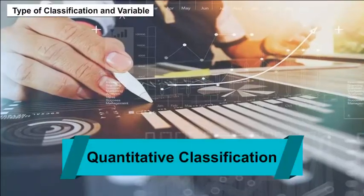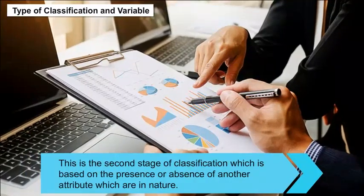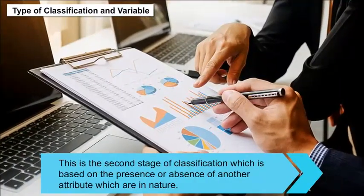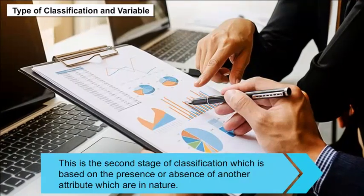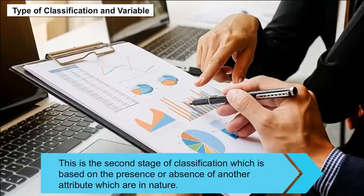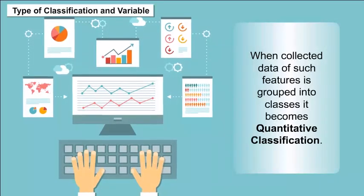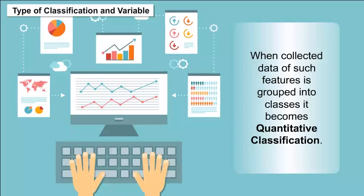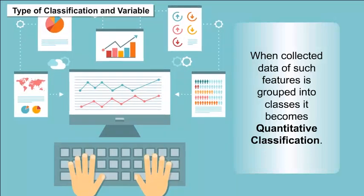Quantitative classification: This is based on the presence or absence of another attribute which are quantitative in nature. When collected data of such features is grouped into classes, it becomes quantitative classification.